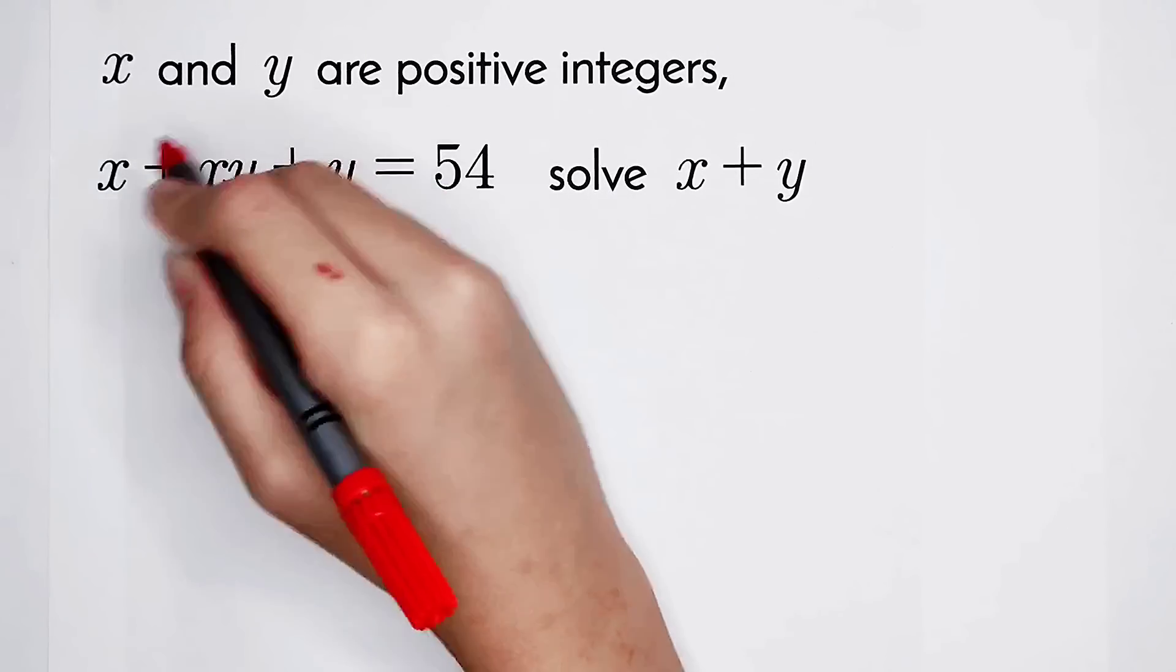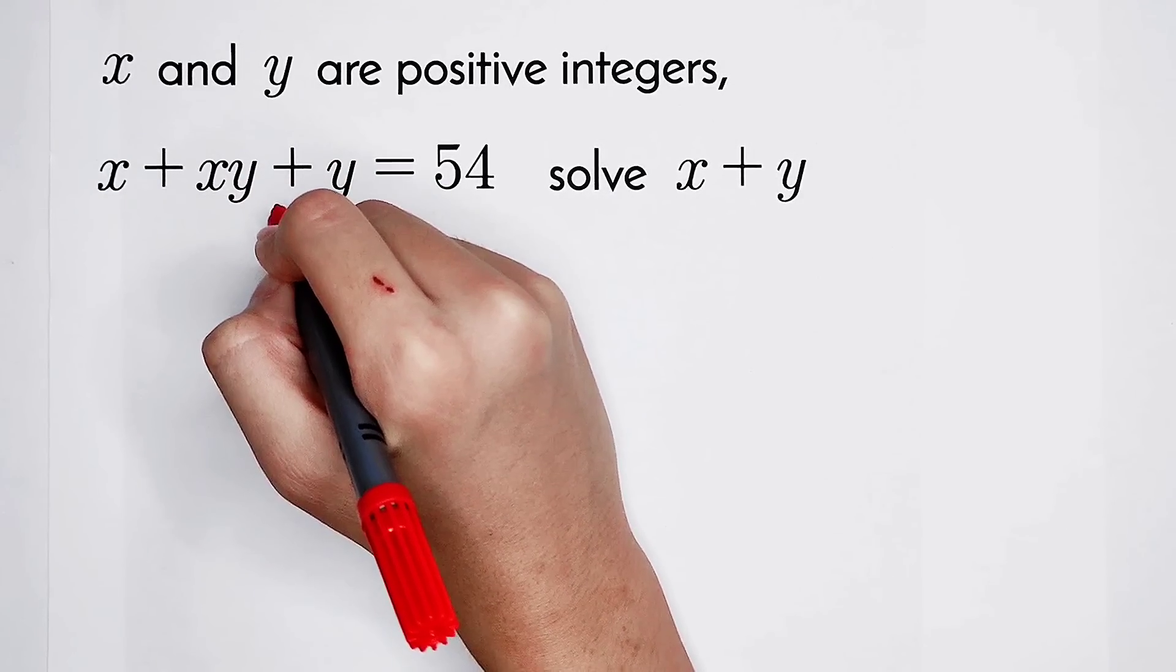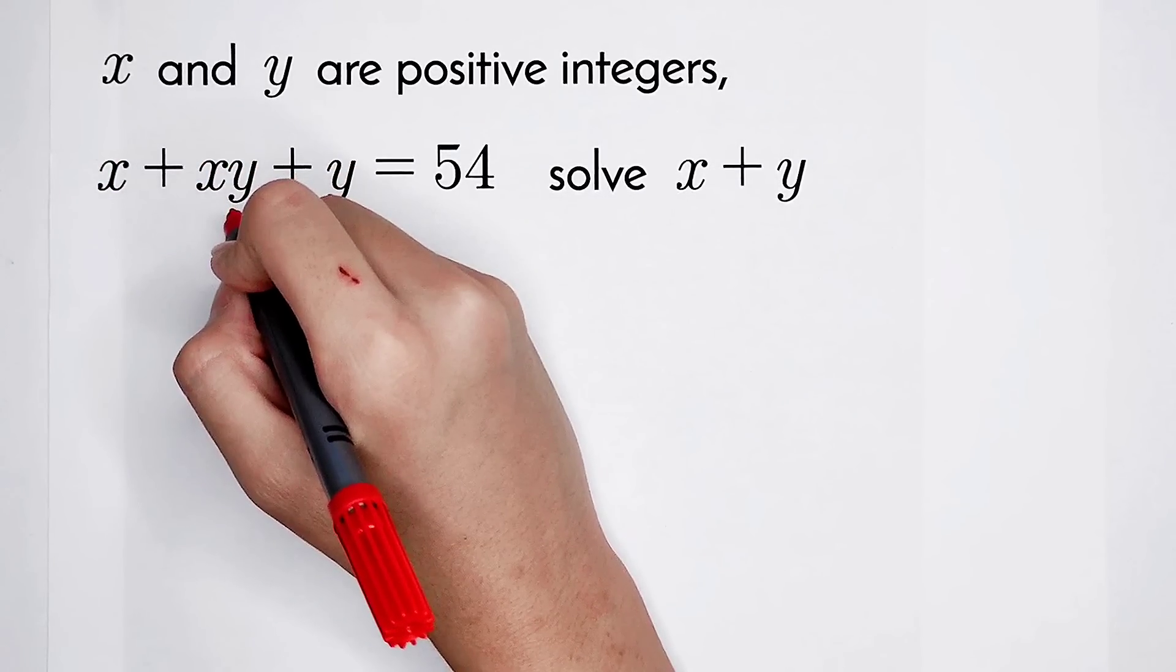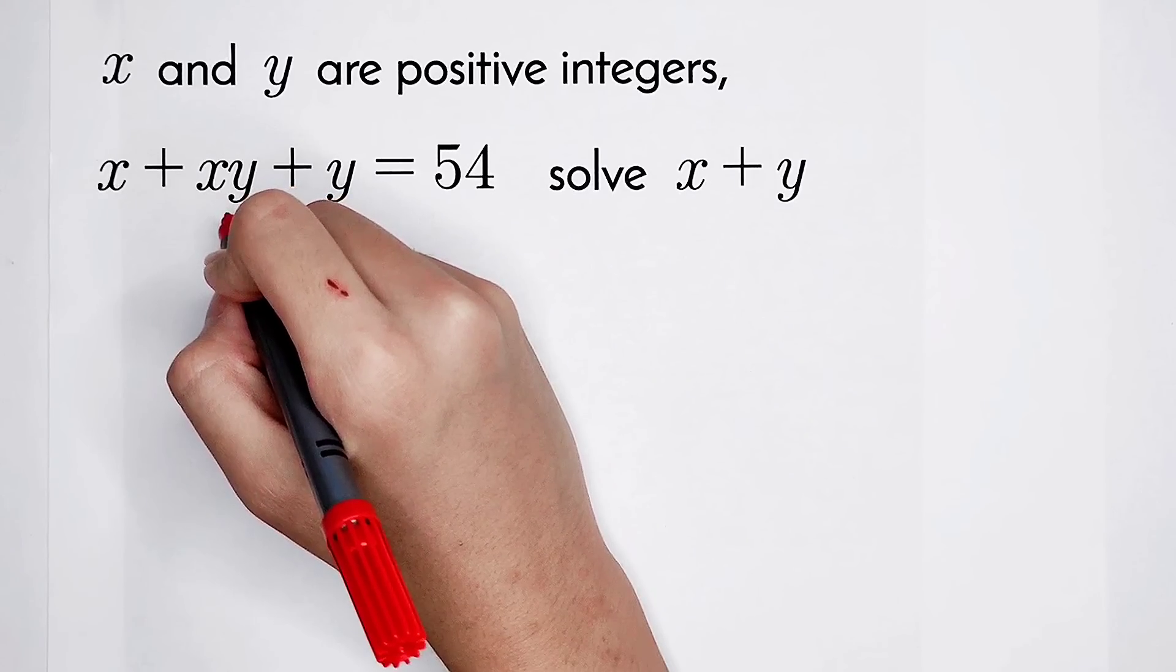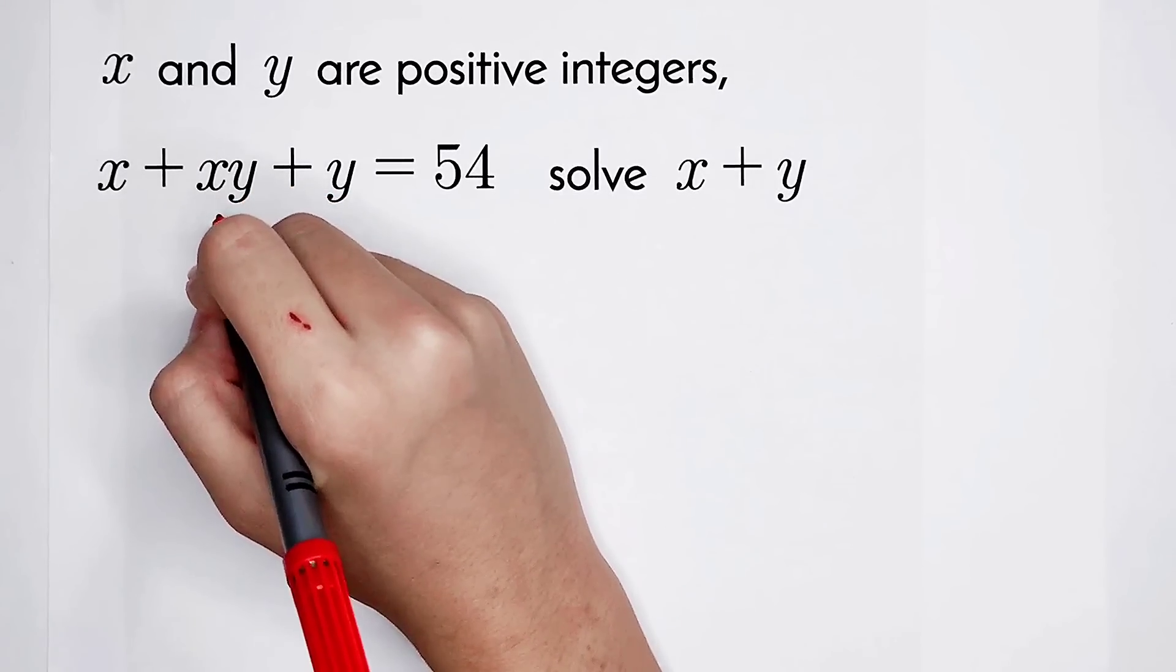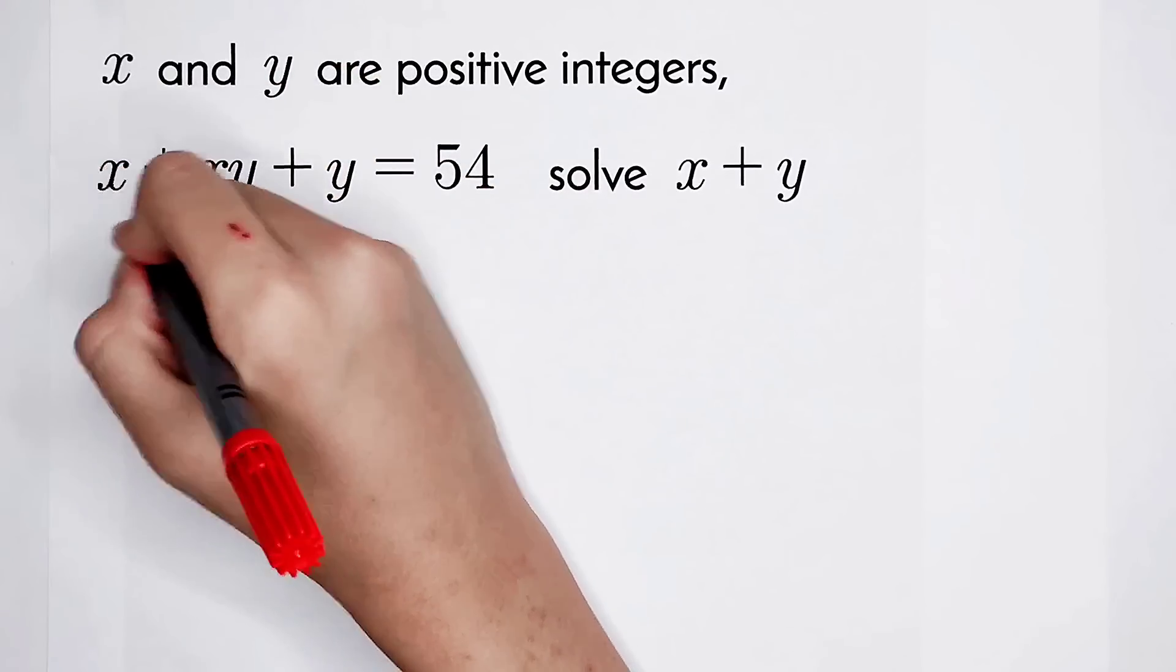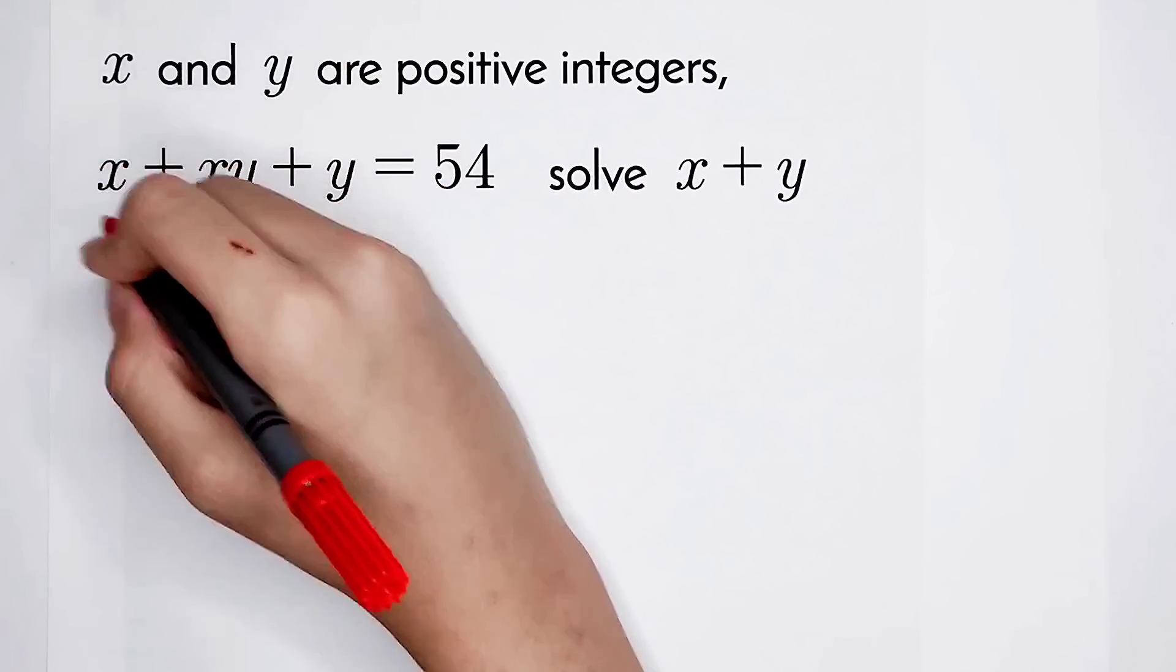I want to factor it. How should we do? This term is x, and this term is x times y. They have the same factor, that is x. So I can take out x from the left side.